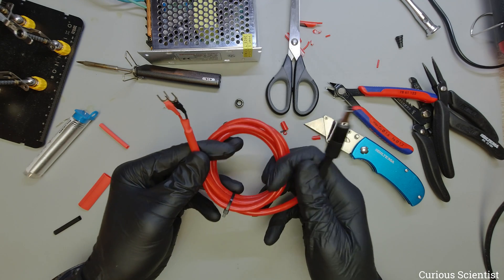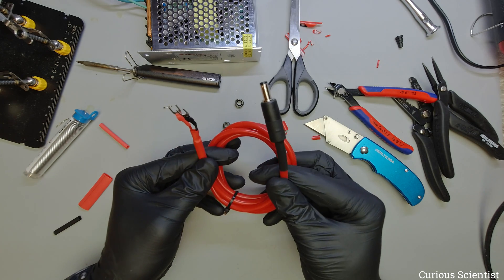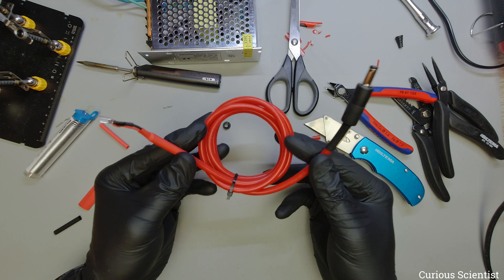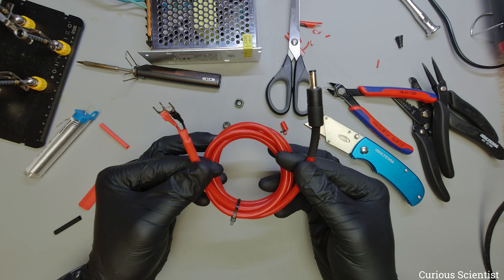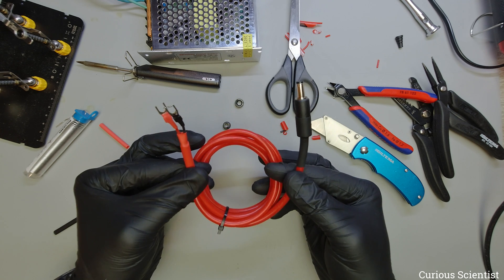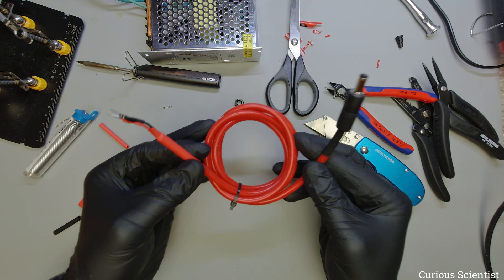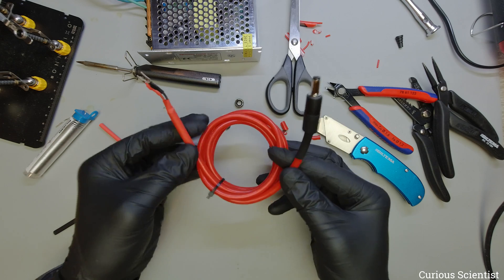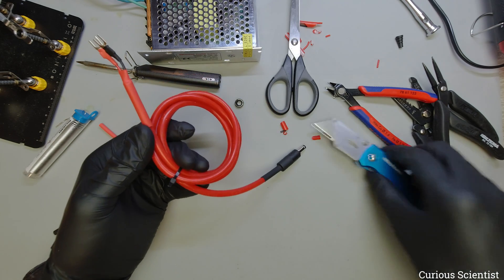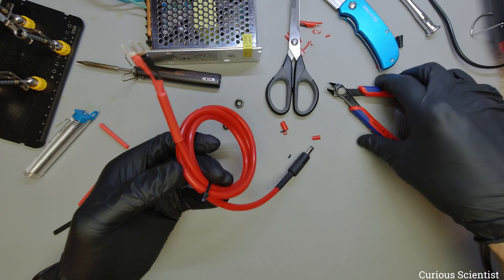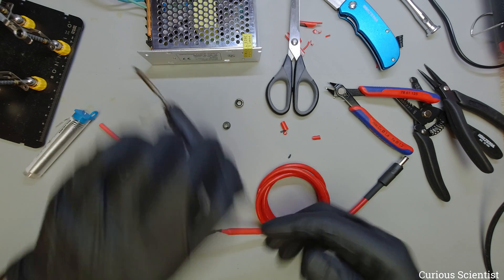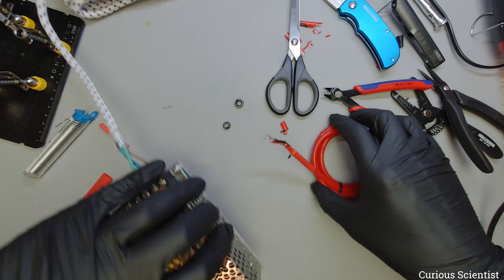So now I have this very, let's say professional looking power cable. So it looks like those overpriced and not really functional speaker cables. So there you go, you can make your own overpriced speaker cable in like 20 minutes. So then let's test the soldering iron with this.